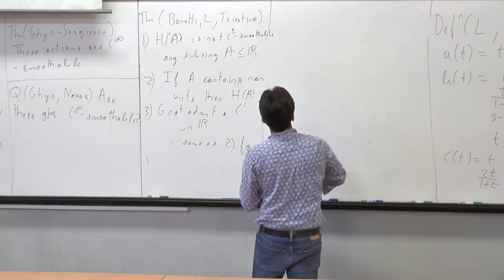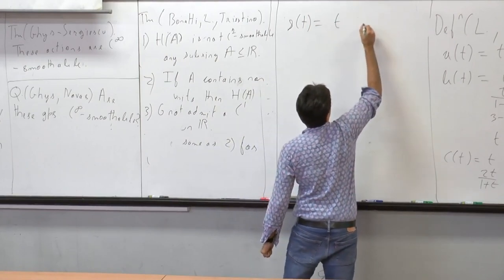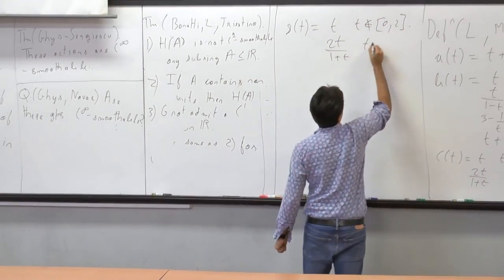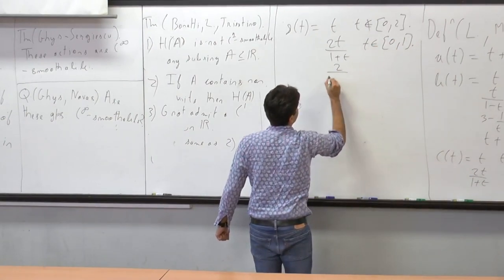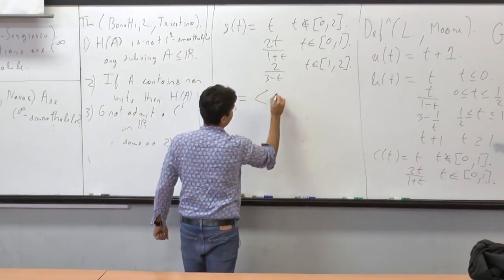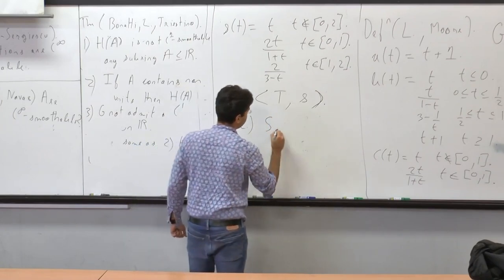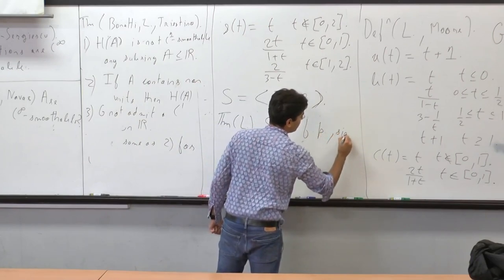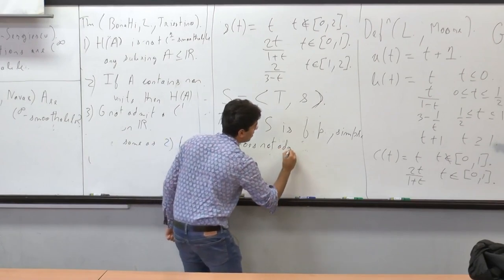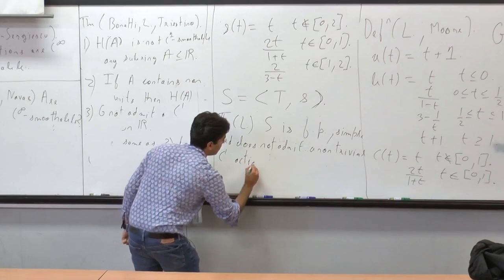I played a little with Thompson's group T and the smoothability aspect. I wrote down this homeomorphism: it's the identity if t is not in (0,2); it's 2t/(1+t) if t is in (0,1); and 2/(3−t) if t is in (1,2). I define the group S as generated by T together with this little s.